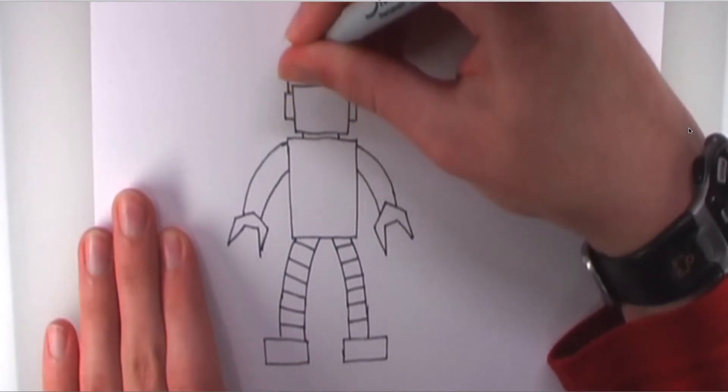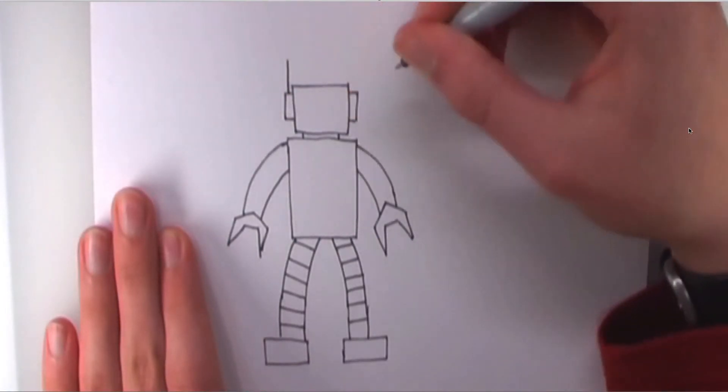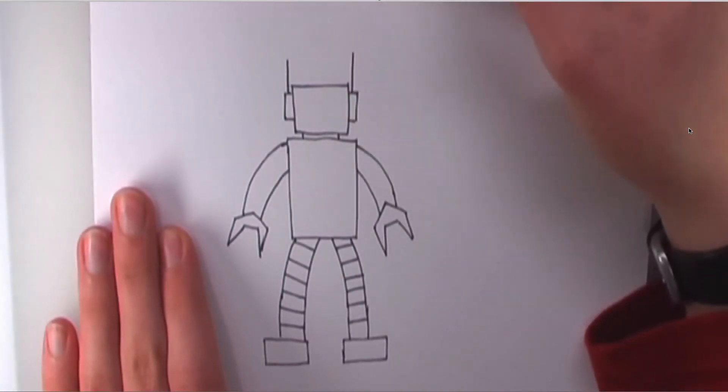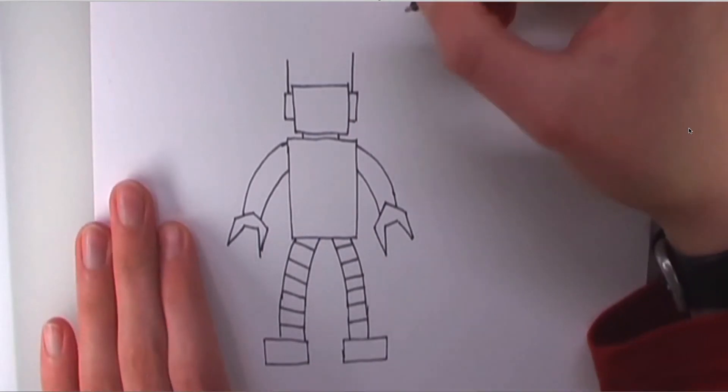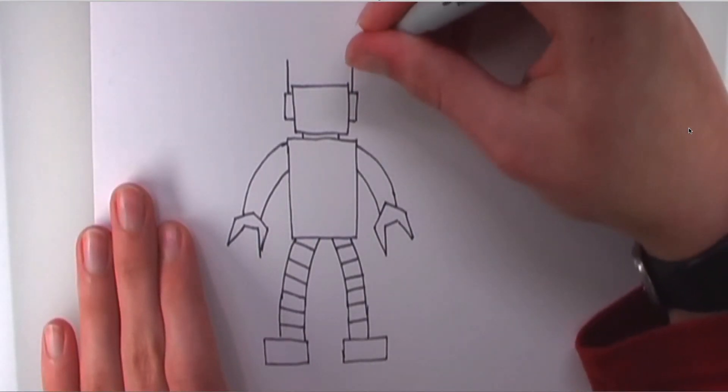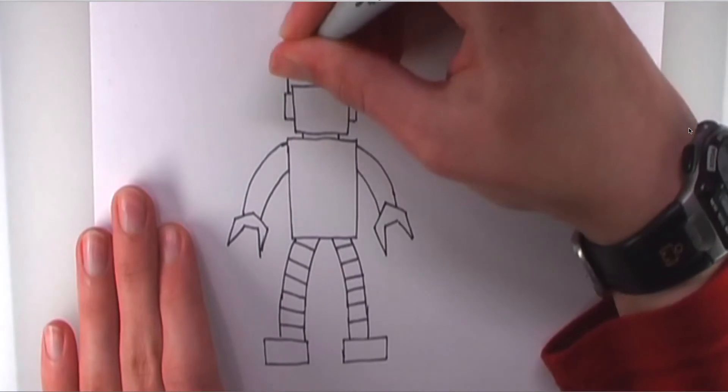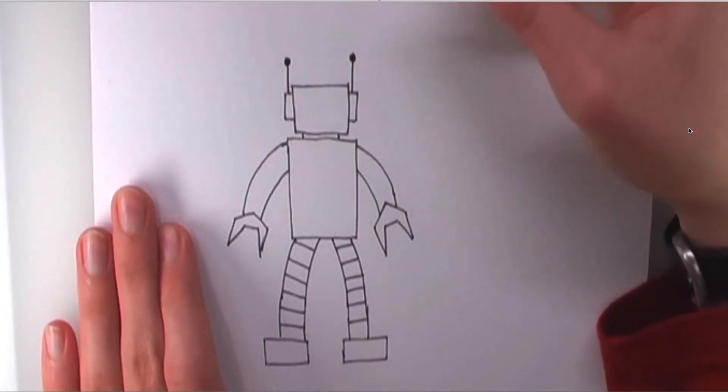And, we're going to have some lines coming up right up in the middle of that rectangle. There will be some antennae, but they also kind of act as robotic ears. On the ends of these lines, we're going to put a bulb. That'll make it look like an antennae.